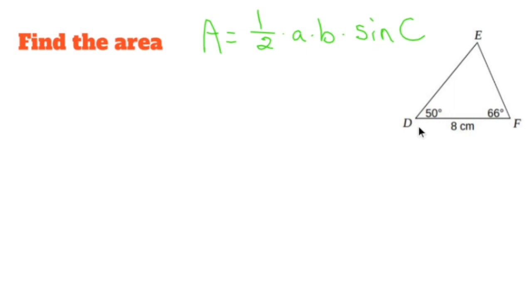All right, so I have a side. I have two angles. What I don't have is a side-side-angle in between. So if I just find one of these sides, I'll have an angle in between and I'll be able to use my area formula.